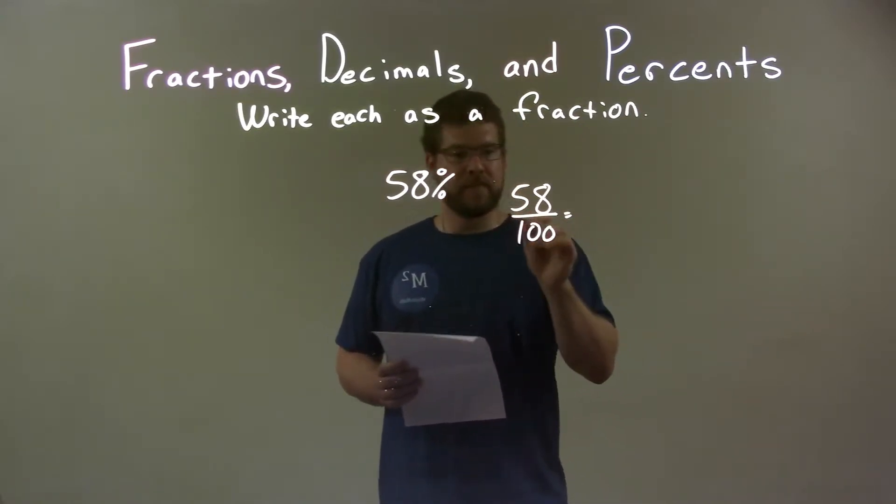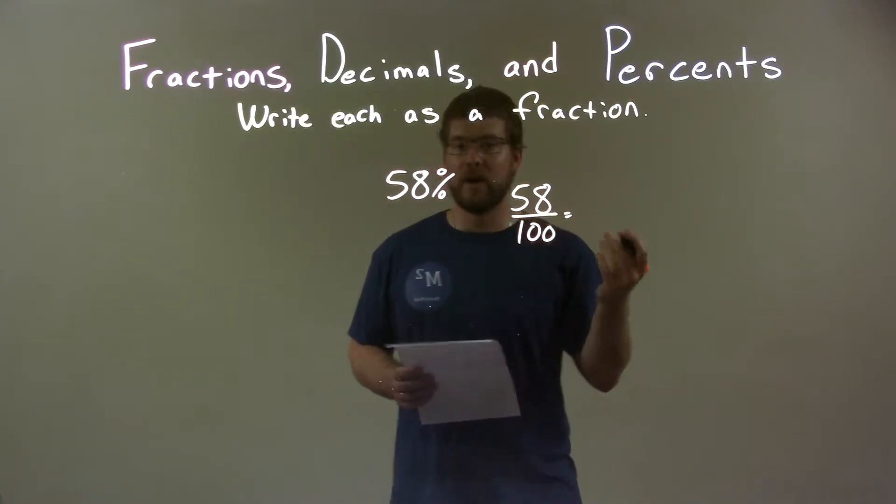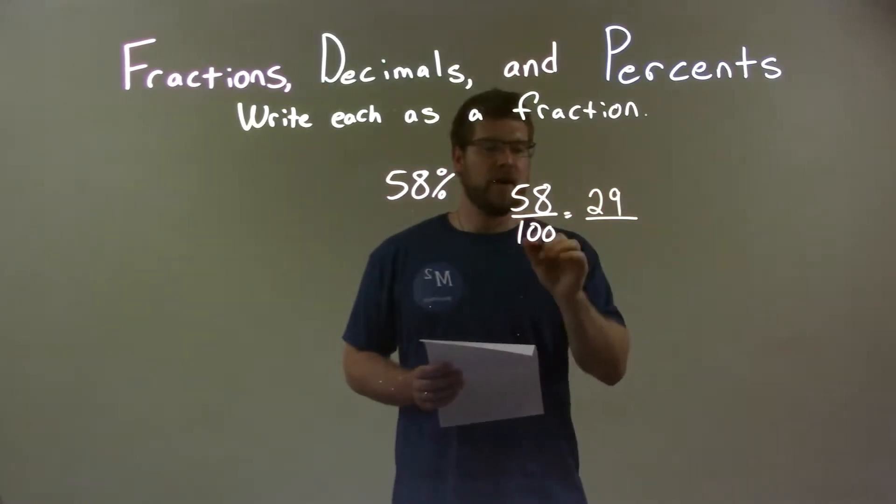29, right? 50 divided by 2 is 25 and then 8 divided by 2 is 4. 25 plus 4 is 29. So we have 29 right here. 100 divided by 2 is 50.